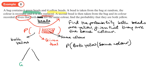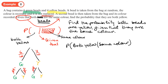We'll use a tree diagram. We have green and yellow on the first branches, then green and yellow again on the second. We start with 6 green out of 10 and 4 yellow out of 10. After taking green, the green count drops by one and the total drops by one. After taking yellow, the yellow count drops by one but the green stays the same.